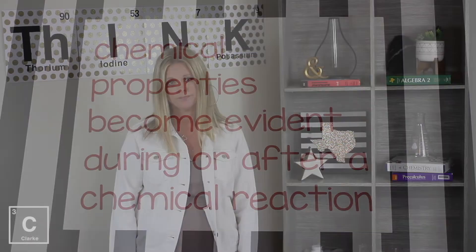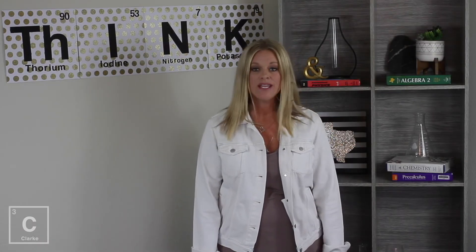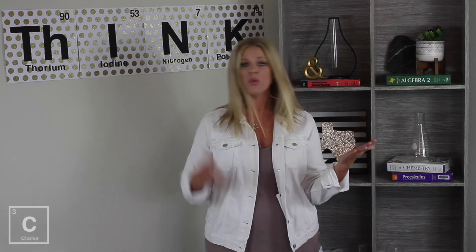Let's talk about a chemical property. Chemical properties become evident during or after a chemical reaction. Chemical properties we can't observe directly — that's really interesting. You can't look at something and tell if it's flammable, corrosive, toxic, poisonous, or if it will or will not react with something. These are all words that describe chemical properties.